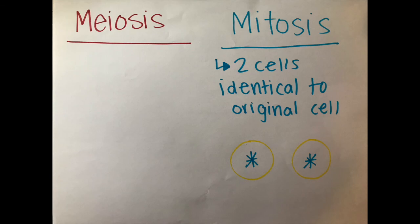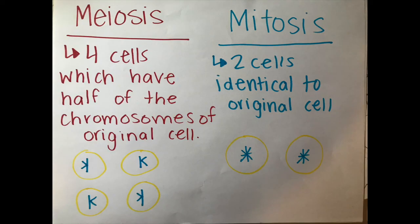So what's the difference between meiosis and mitosis? The difference is that mitosis produces two cells that are identical to the original parent cell, and meiosis produces four cells, which each have half of the chromosomes of the original parent cell.